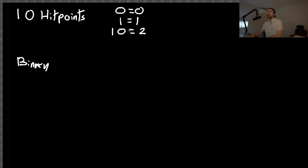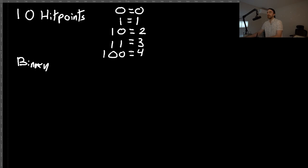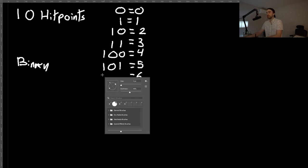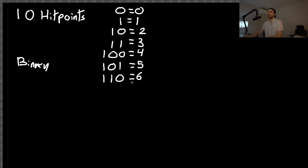We keep on counting: zero units, one unit, two units. We can increment to three — that's one-one — and at that point we can't increment anymore, so we reset both digits and carry a one to the left. From there we start incrementing where we can. So four is one-zero-zero, five is one-zero-one, six is one-one-zero, and for seven we get one-one-one.